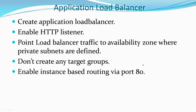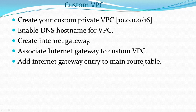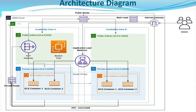Going back to the architectural diagram — we have created a VPC, we have created an internet gateway, we have associated this internet gateway with our VPC, and we have created a route in our main route table which comes as a part of the VPC. Thank you guys, see you in the next session.